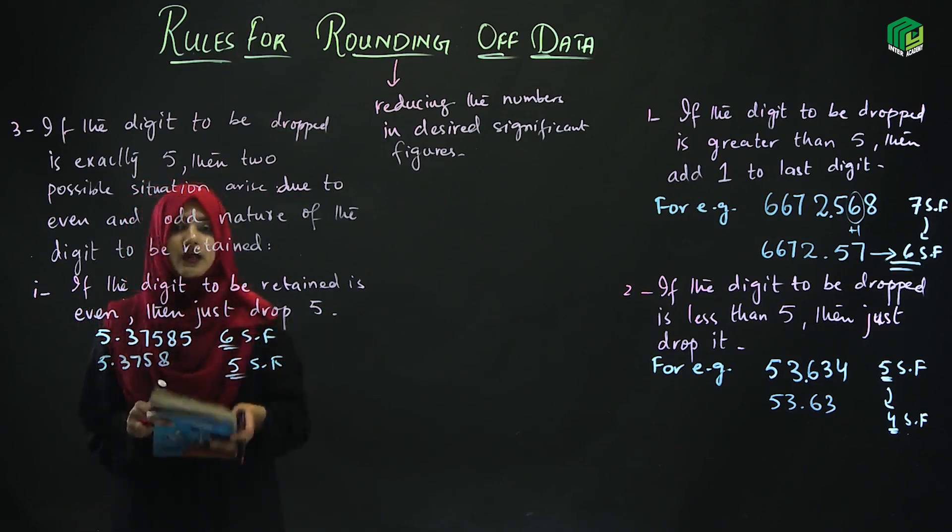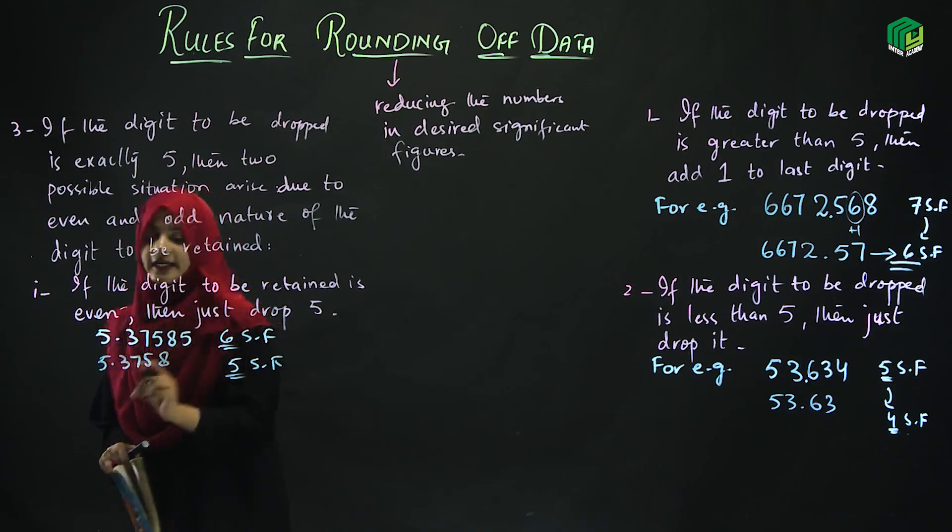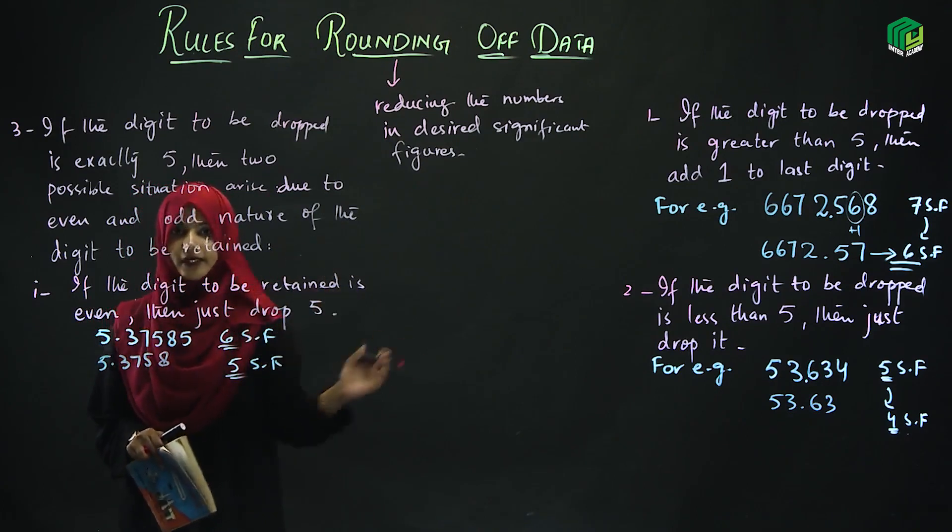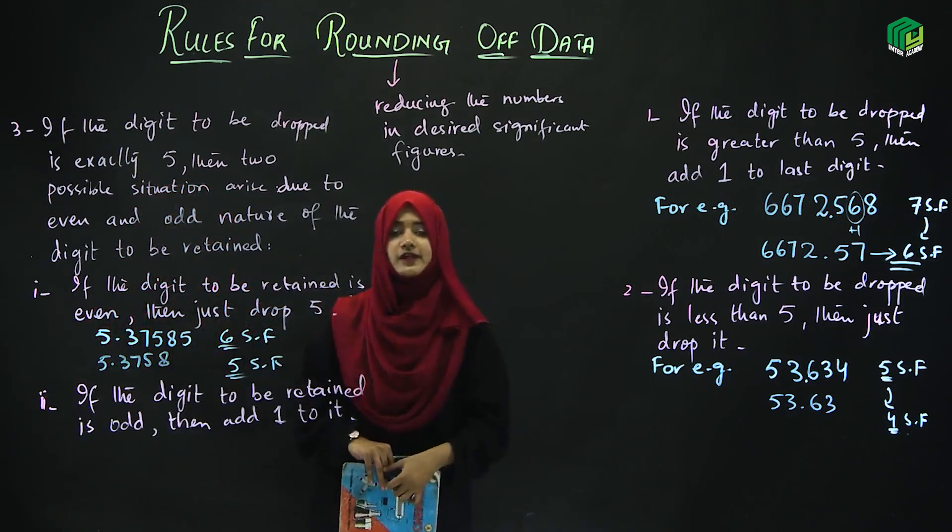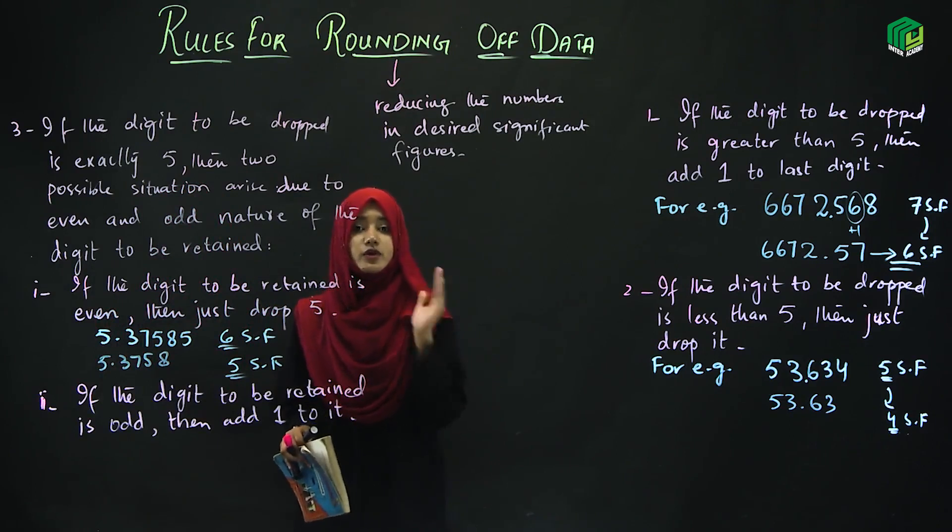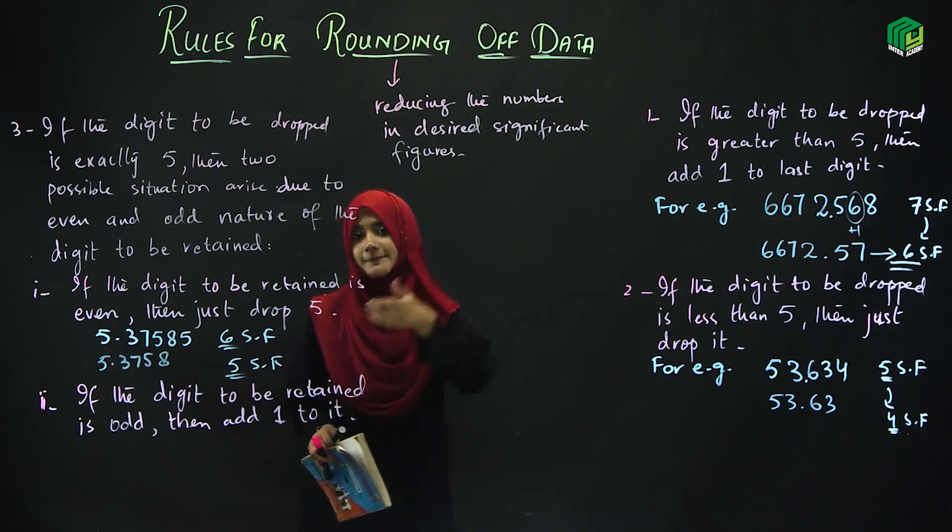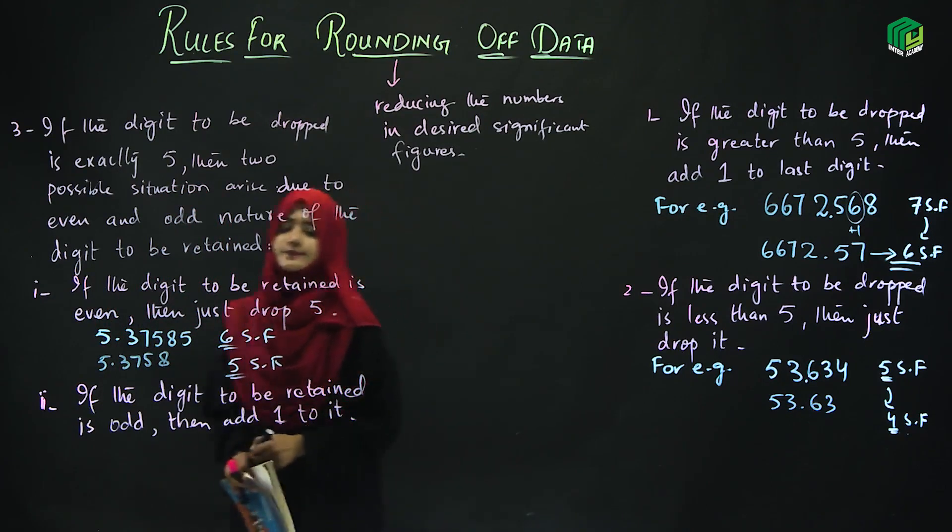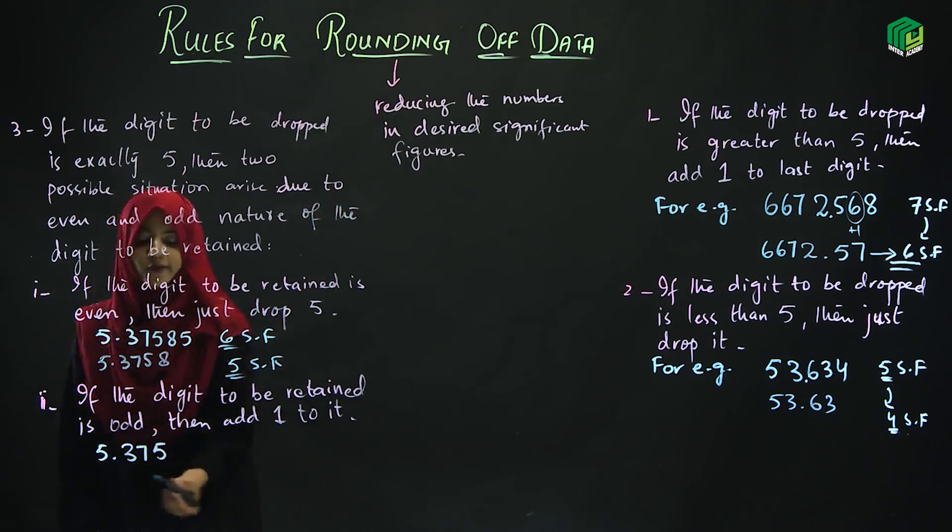Now if we talk about the second possibility, which are odd numbers, odd retained numbers, second possibility. If the retained number is odd, then we will not just drop 5. The retained number will be plus 1.